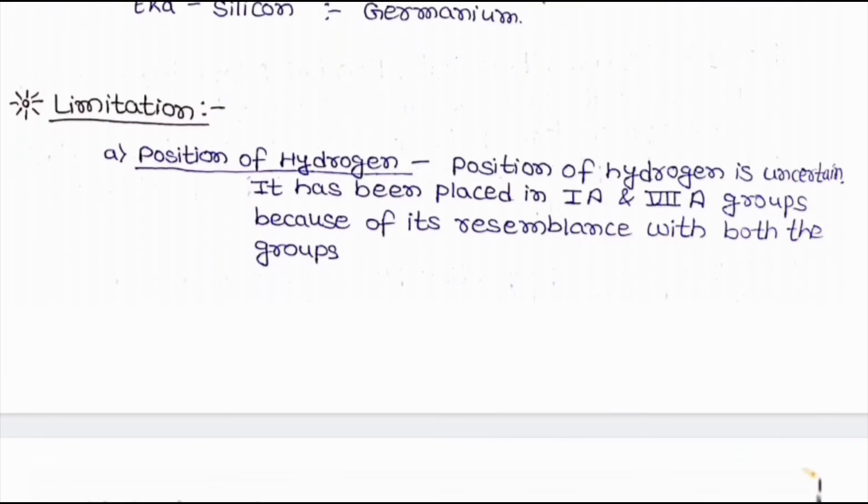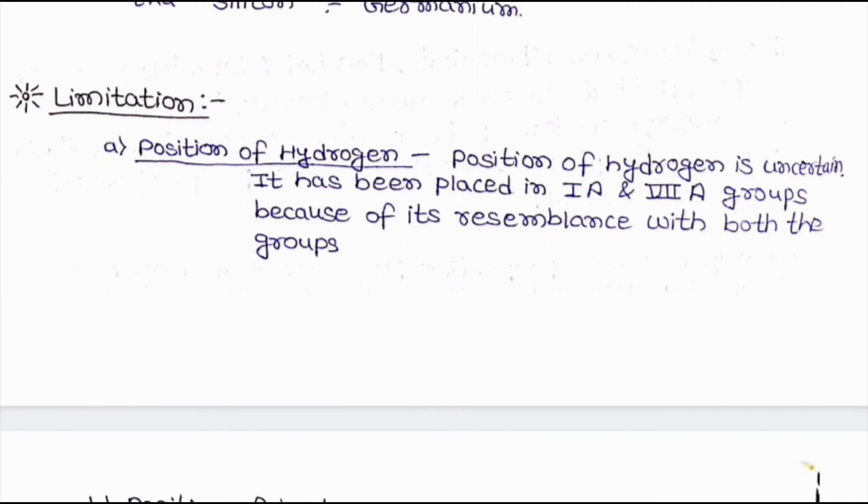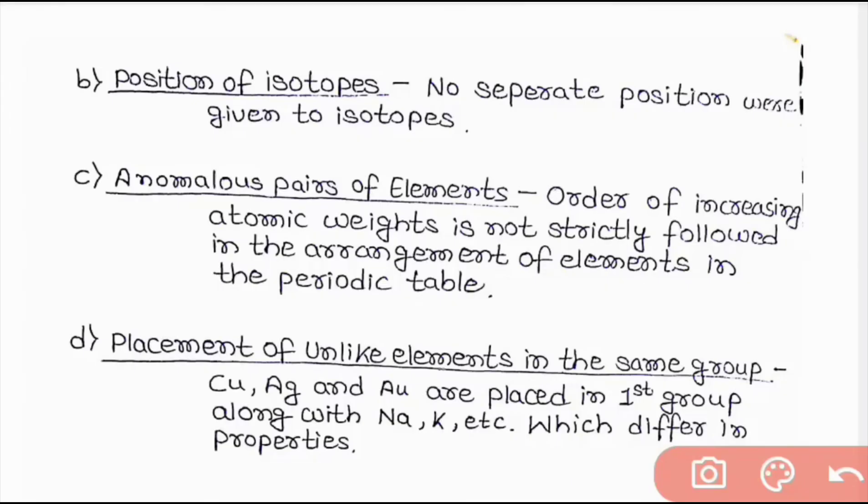Now let us come to the limitation of Mendeleev periodic table. The first limitation is the position of Hydrogen. Since the position of Hydrogen is uncertain but it was placed in the first and seventh group because of the resemblance with both of the groups. Second limitation is position of isotopes. No separate positions were given to isotopes.